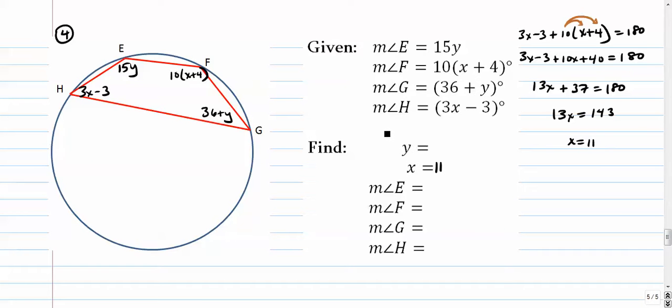I did it in my head, so I'll check it to make sure that it works. Plug 11 back in here. So it's 10 times in parentheses 11 plus 4. That's 15 times 10. Angle F should be 150.